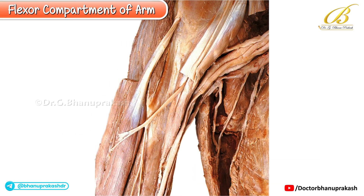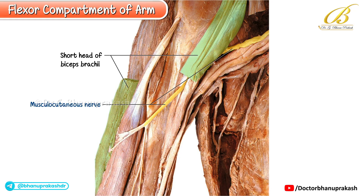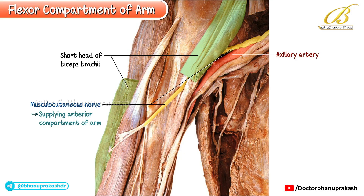In this specimen, the short head of the biceps brachii has been cut to display the musculocutaneous nerve, which is the primary nerve supplying the anterior compartment of the arm. Within the axilla, the musculocutaneous nerve is positioned lateral to the axillary artery. The cut distal portion of the short head of biceps is placed alongside the long head for clarity.